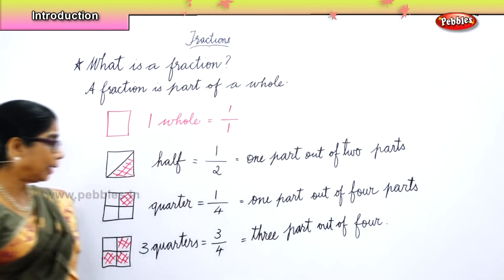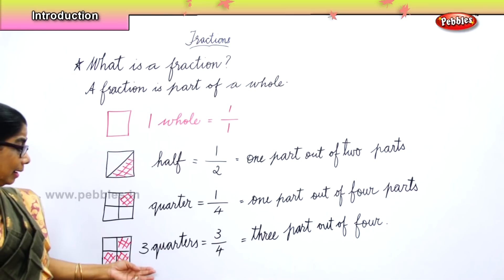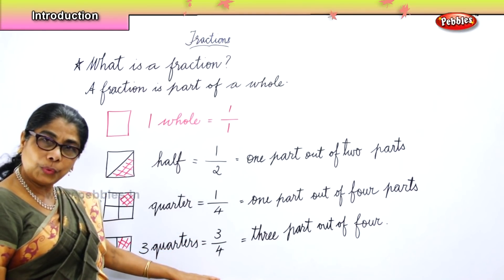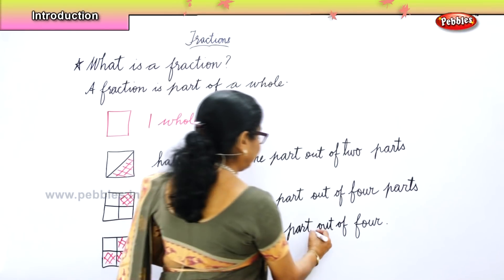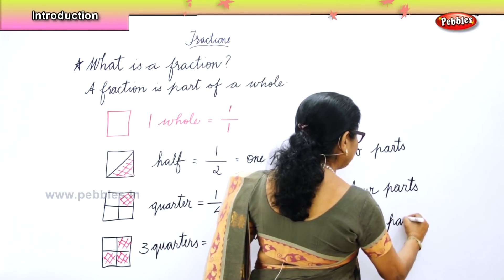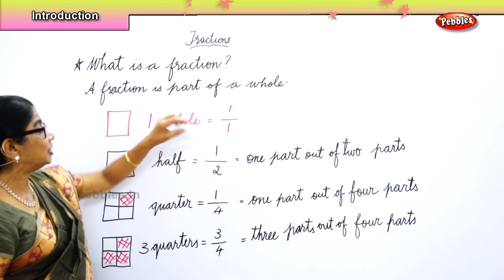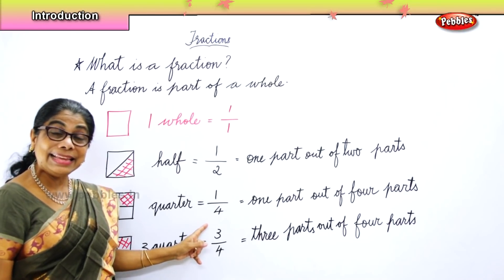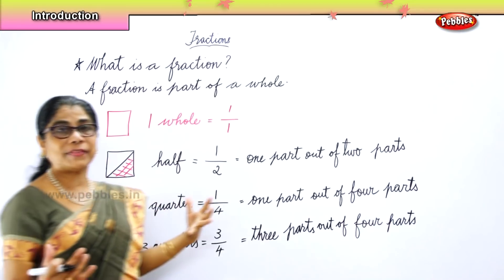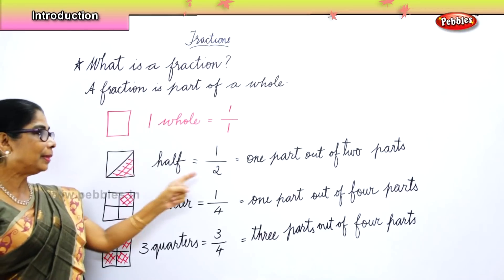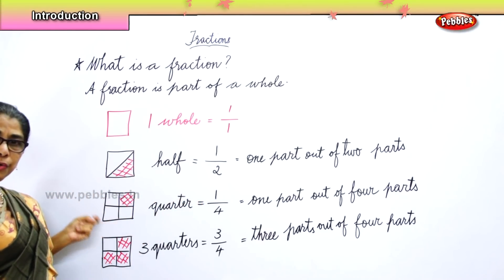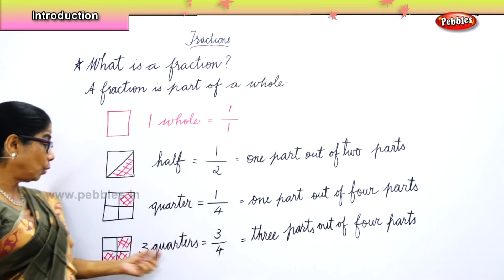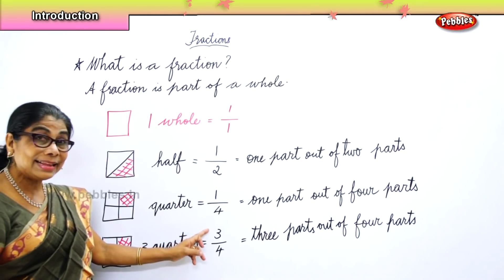Now we have three parts shaded — three quarters. We write the fraction as three by four. In words: three parts out of four parts. So we represent the fractions: whole is one by one, half is one by two, quarter is one by four, and three quarters is three by four. When we cut a cake into two halves, we represent it as one by two. When we divide into four equal parts and take one part, we say one by four. When three portions are shaded, we write three by four.